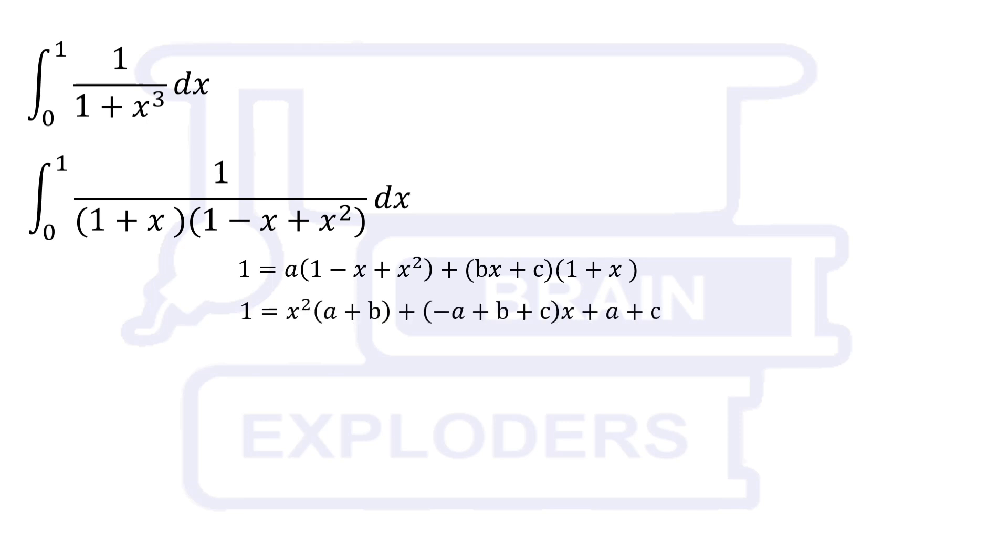This equation must be true for all values of x. Therefore, terms of x squared and x must be eliminated.